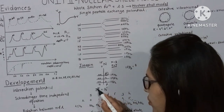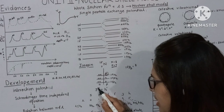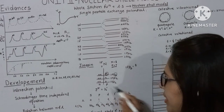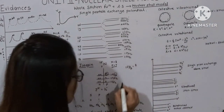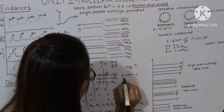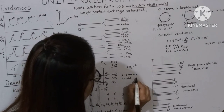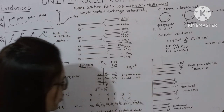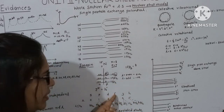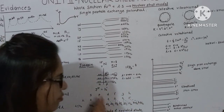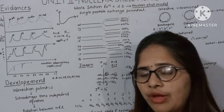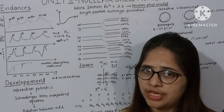The single-particle exchange potential shell model states that the single unpaired particle decides the spin-parity of the nucleus. Spin-parity is written as Jᵖ, where J is the spin and π is the parity. For nitrogen-15, the unpaired proton is in the 1p₁/₂ shell, so spin is ½ and parity is negative — since for the p orbit, L=1 which is odd, giving negative parity. The ground state spin-parity is ½⁻.